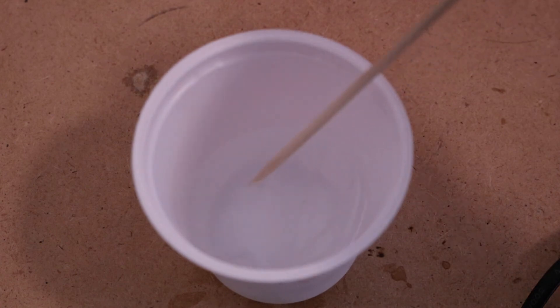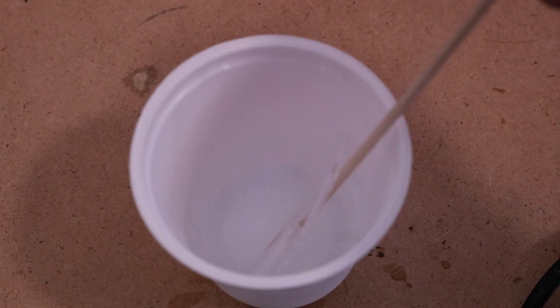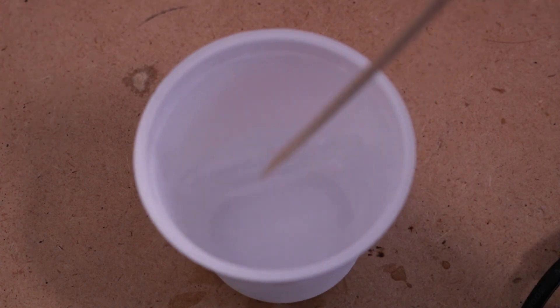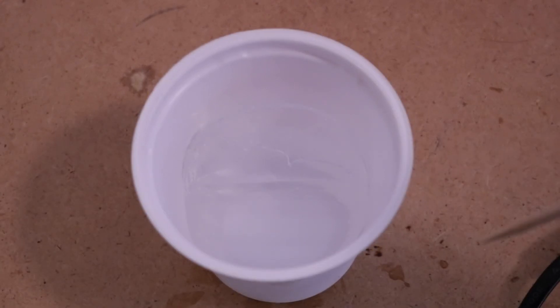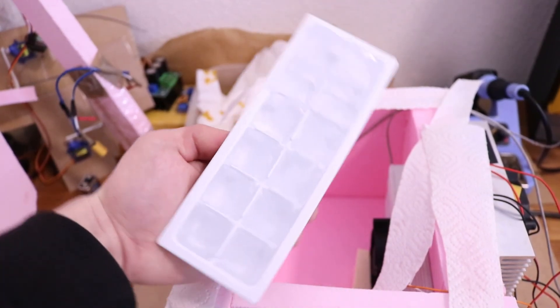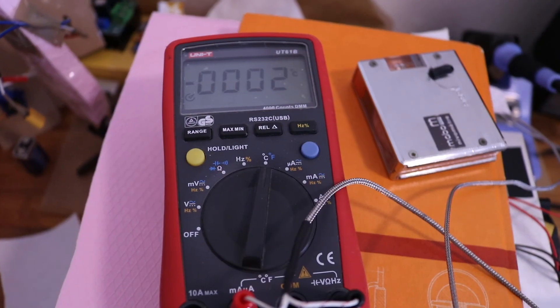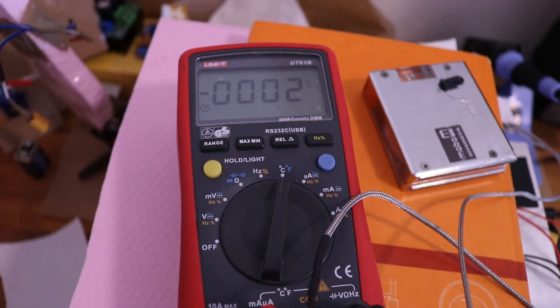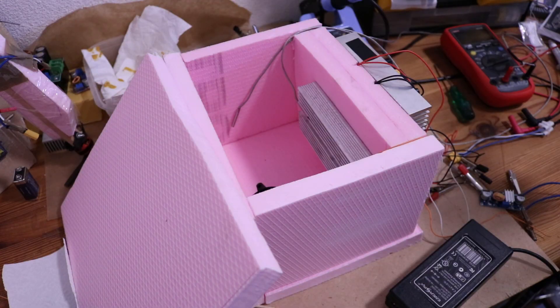But of course water needs a lot of energy and it probably takes a while to freeze. So I continued with putting already frozen ice cubes in the box and they stayed frozen and I had minus two degrees in the inside of the box for a pretty long time. So the freezer, the mini freezer, is working.